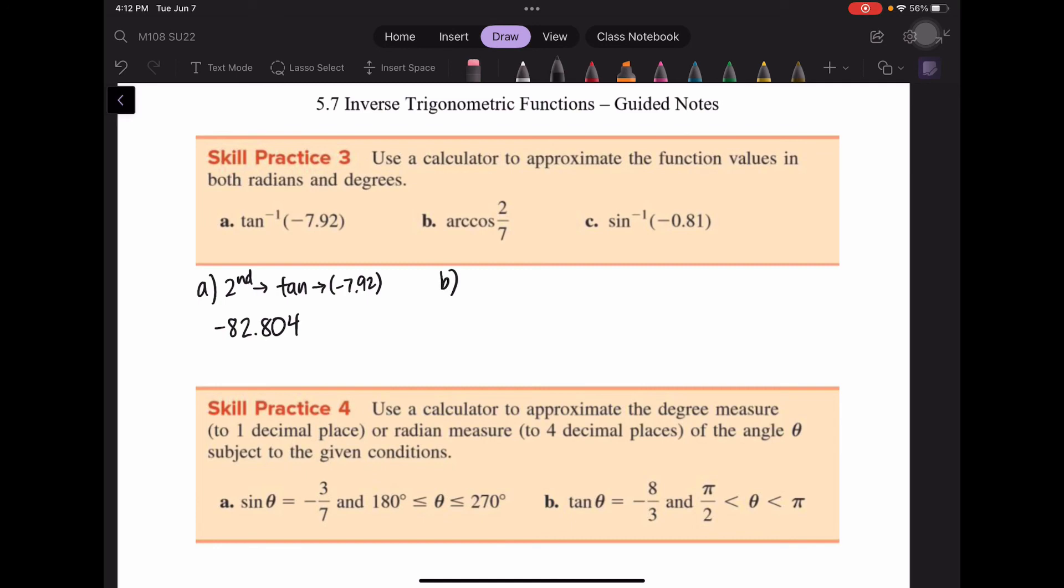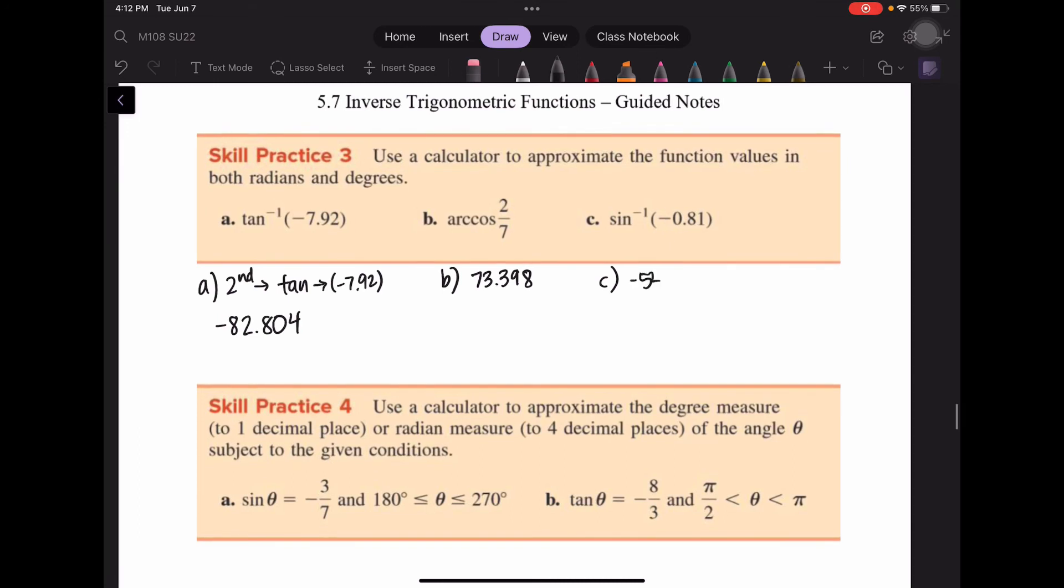For part b, arc cosine is going to be the inverse cosine, so you're going to press the second button, the cosine button, and enter 2 over 7, and you will get 73.398. For part c, you would press the second button and the sine button to get inverse sine, and then you would enter negative 0.81, and you would get negative 54.096. Those are all degrees, so I need a degree symbol.